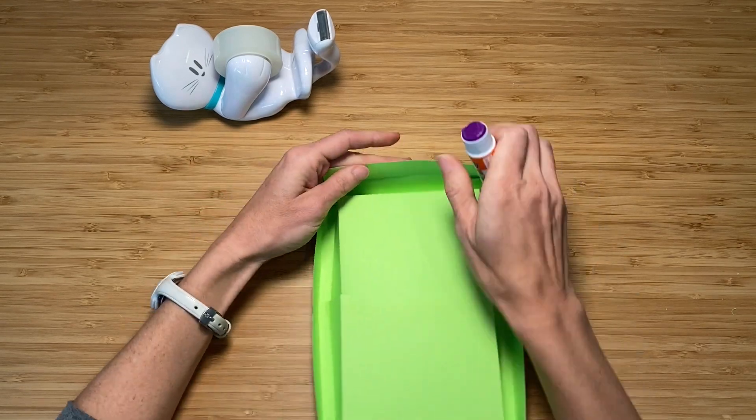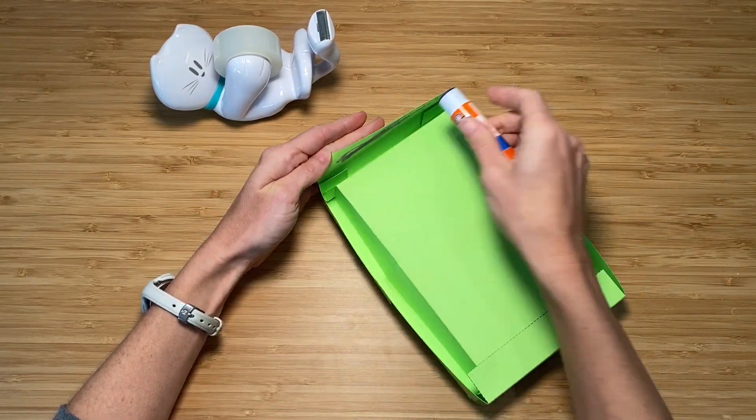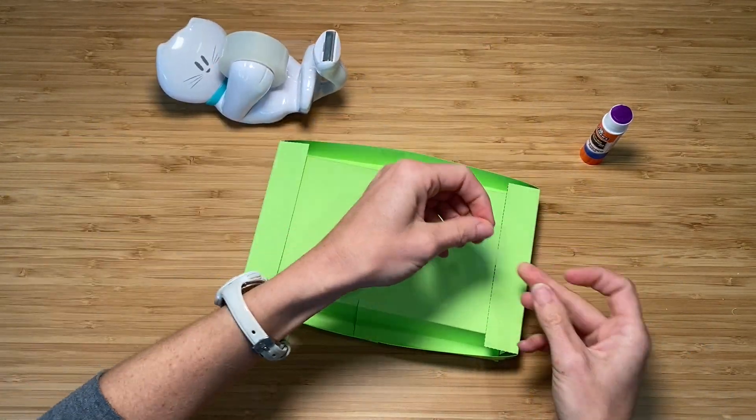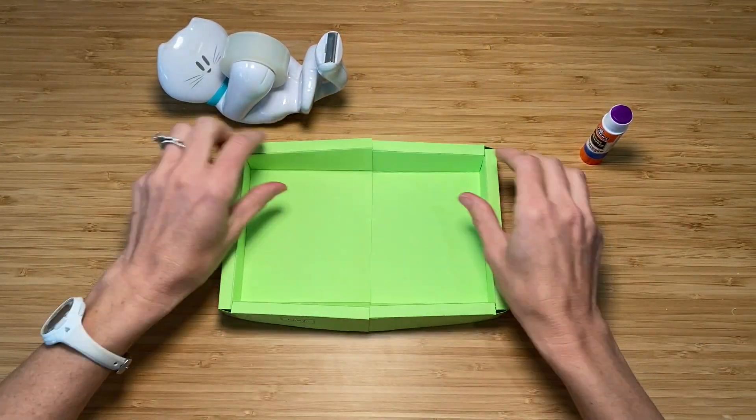The last thing you're going to do is either glue or tape these flaps down. They're just going to help your cell keep its shape a little bit better.